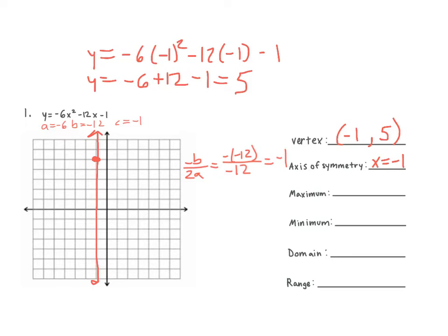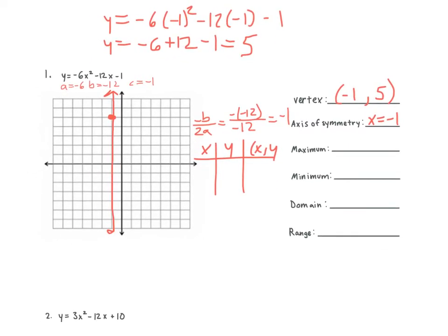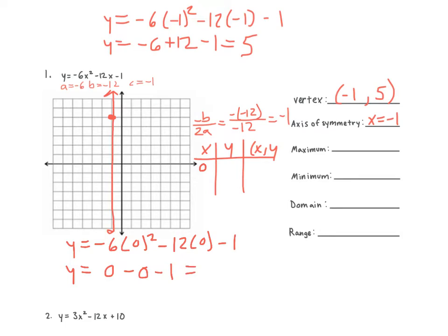How do we find other points on our graph? Plug in numbers. So what can we plug in? 0. So we have y is equal to negative 6 times 0 squared minus 12 times 0 minus 1. So we have 0 minus 0 minus 1, which is negative 1. So when we plug in 0, we get negative 1, and our first point is going to be 0 comma negative 1.